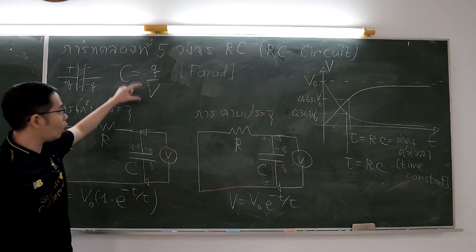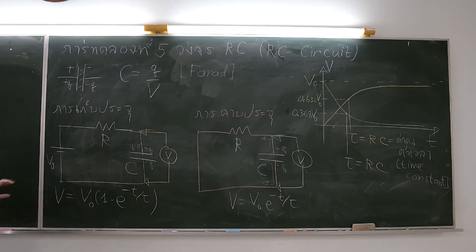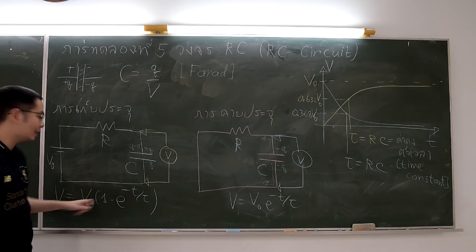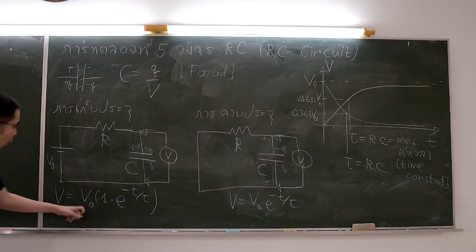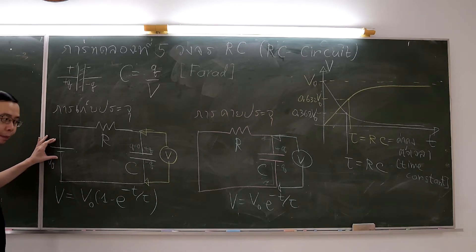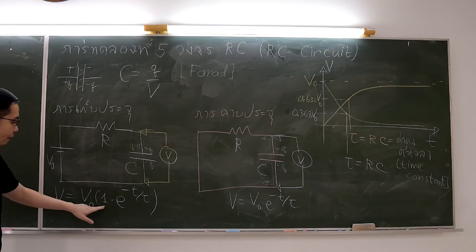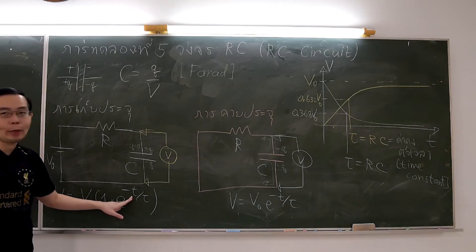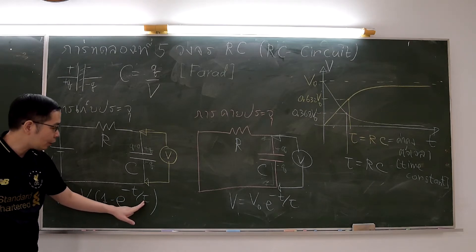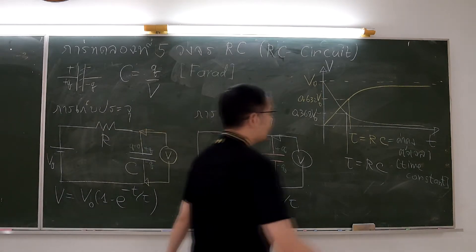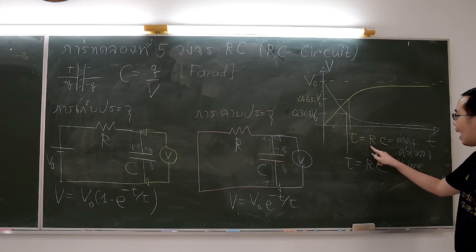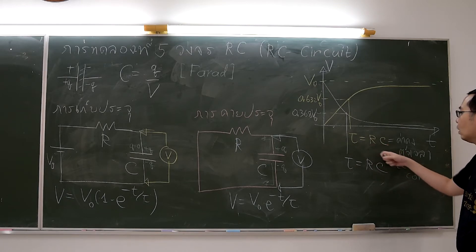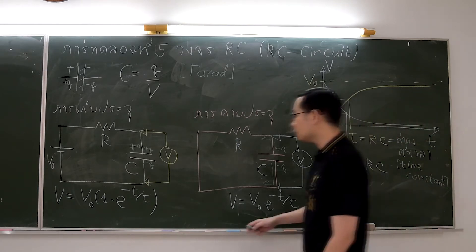We can show the relation between potential difference and time by the equation: V is the potential difference at any time t, equal to V₀ multiplied by (1 minus e to the power of negative t divided by τ), where V₀ is the electromotive force of the battery. τ is the time constant, equal to resistance multiplied by capacitance. The time constant shows the rate at which electric charges are stored.